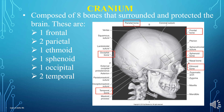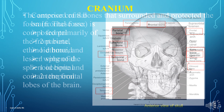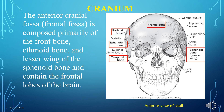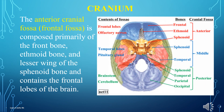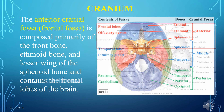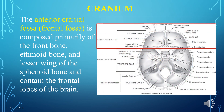This is a 3D lateral view of the skull. Please note the bones in the red boxes. The anterior cranial fossa, also called the frontal fossa, is composed primarily of the frontal bone, ethmoid bone, and lesser wing of the sphenoid bone, and contains the frontal lobes of the brain. This is another picture showing the anterior fossa of the cranium.